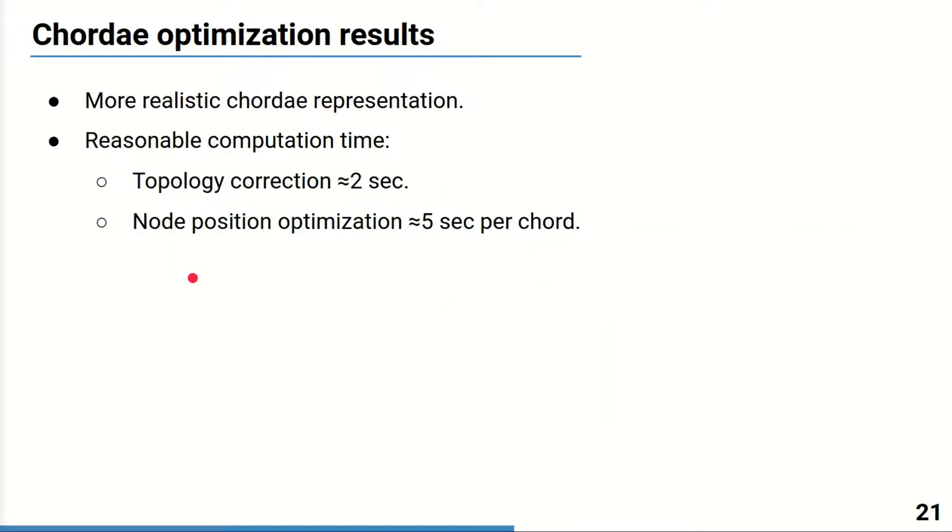We believe that the application of this optimization step gives a more realistic chordae representation and thus would provide a better base for the simulation. The procedure is quite fast, it takes only two seconds for the topology correction and five seconds for the node position optimization per chord on average.